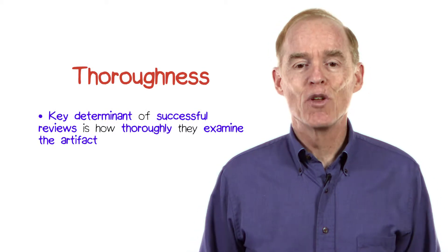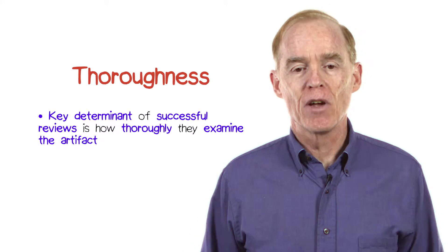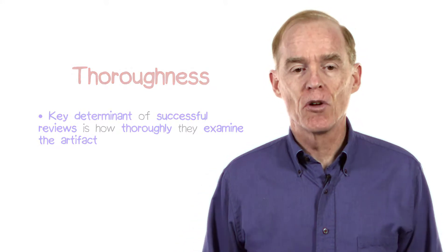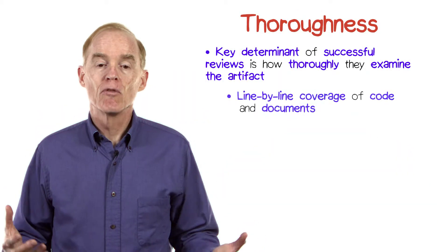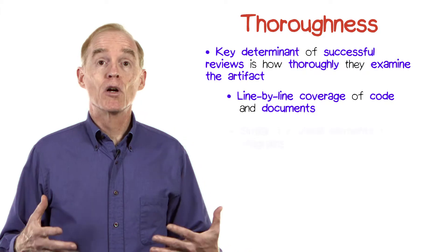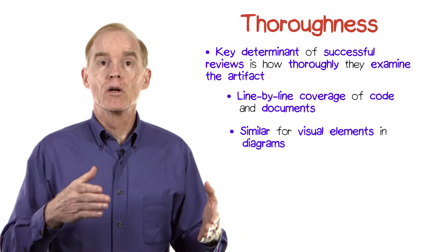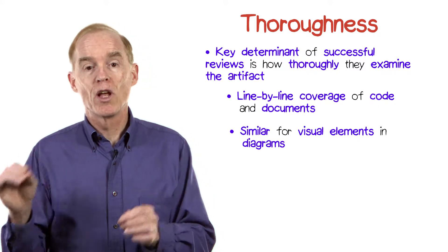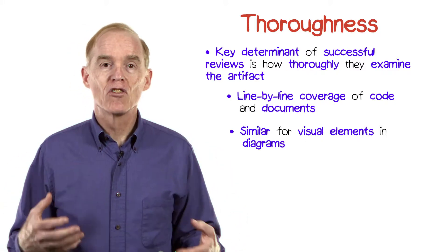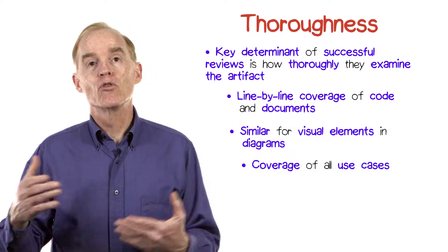A key determinant of a successful review is how thoroughly the participants examine the artifact. There are a variety of means that have been devised to encourage this thoroughness. Line by line coverage of the code or the documents involved. Similarly, if it's a diagram that's being reviewed, going through systematically on the visual elements of the diagram. If we're talking about the early stages, the requirements document, it may be there's use cases and making sure that all the use cases are gone through.